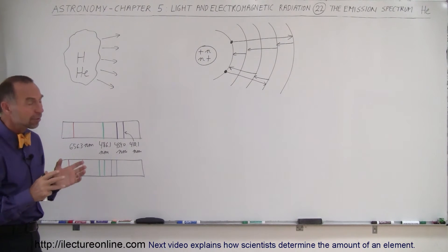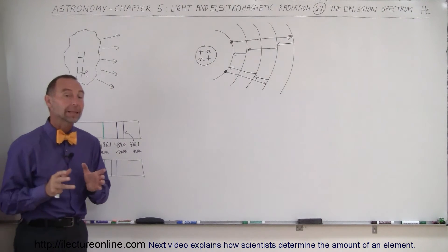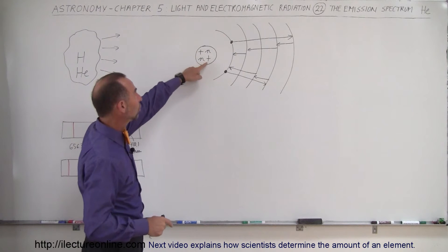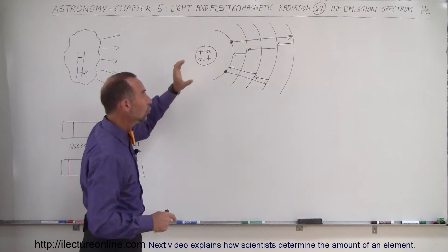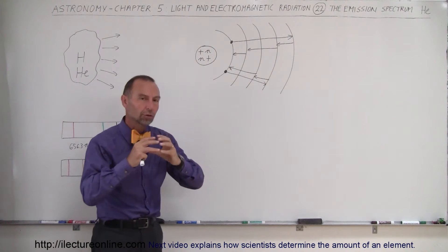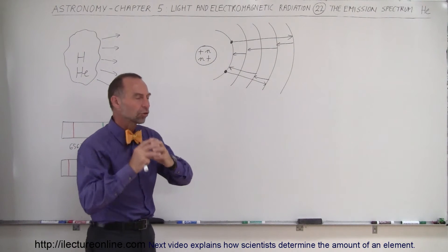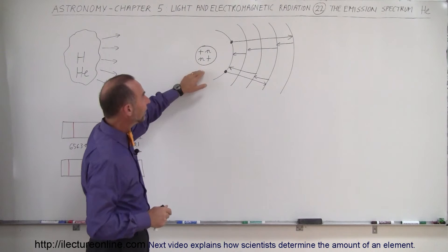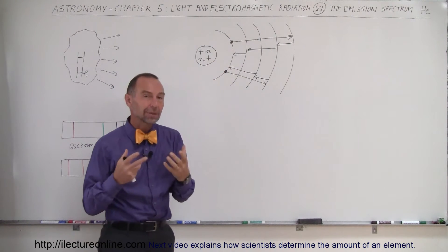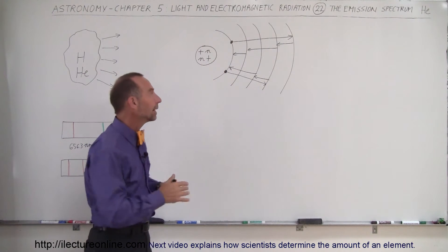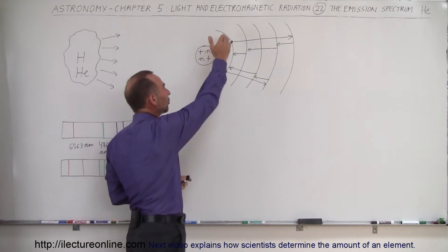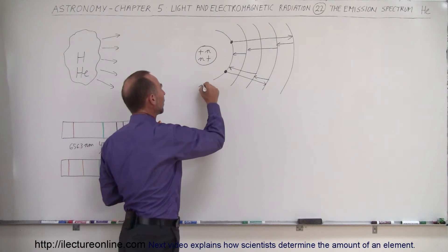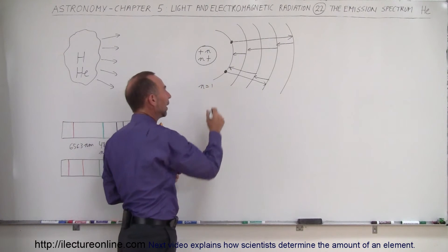Helium is a much more complicated atom. It has two protons and two neutrons in the nucleus, so it has double the charge in the nucleus, and it has two electrons, which typically like to reside in the innermost energy level at the n equals 1 level.